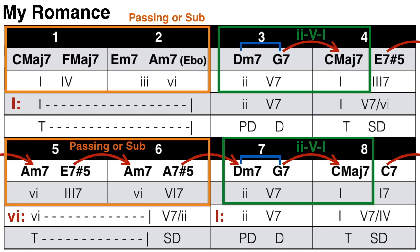At the end of bar 4 we have a secondary dominant — E7#5 — which takes us to the A minor 7 chord, the relative minor of C major. Then another E7#5 takes us to yet another A minor 7. So we're playing a 5-1-5-1 in the key of A minor. I would call this a modulation because it lasts for two bars — a relatively long time — and because moving to the relative minor is a very common key for modulation. There are no 2-5-1s in A minor here; the progression just moves quickly through a 5-1-5-1, so it's just a tonic prolongation of the A minor 7 chord.